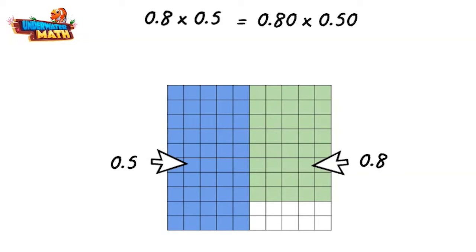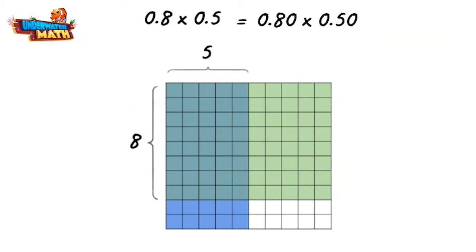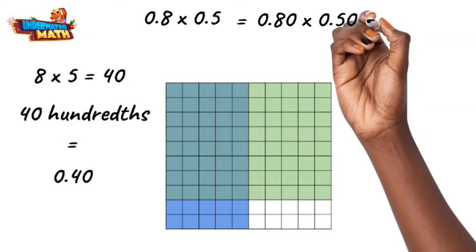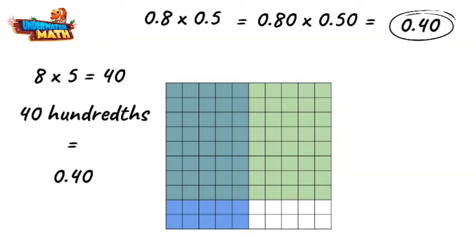The overlapped portion with both colors is our product in hundredths. This is an eight by five rectangle, so there are forty squares, or forty hundredths. Here we've finished—our product is four tenths, or forty hundredths.